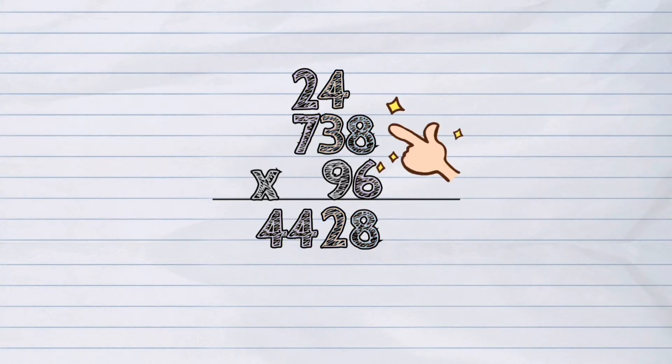After 738 has been multiplied by 6, 738 will then be multiplied by the tens place of the multiplier, which is 9. The number is moved one place to the left because we are multiplying by a tens place number. So, let us write 0 in the ones place column.